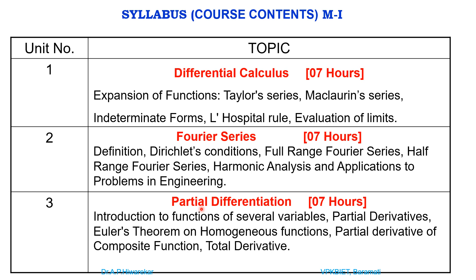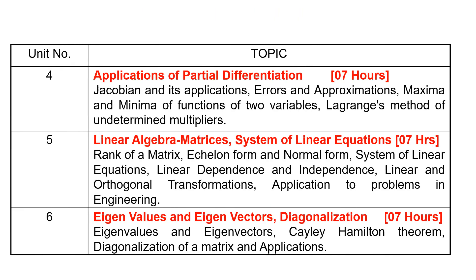Unit 3 consists of partial differentiation, covering functions of several variables, partial derivatives, Euler's theorem on homogeneous functions, partial derivative of composite functions, and total derivatives. Unit 4 covers applications of partial differentiation, including Jacobians and their applications, errors and approximations, maximum and minimum of functions of two variables, and Lagrange's method of undetermined multipliers.